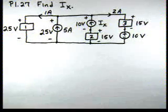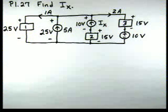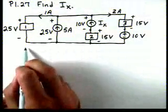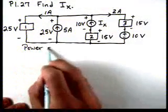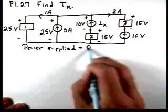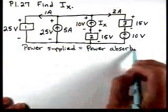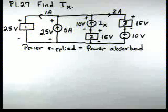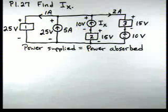Here's the problem-solving video for problem 127. It says find Ix, and we see our circuit with the different elements. The way we'll approach this problem is we know that for a circuit the power supplied has to equal the power absorbed. So we're going to calculate the power absorbed and the power supplied, set those equal, and that's how we'll find the variable Ix.